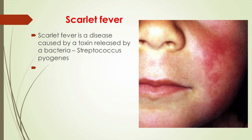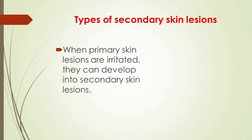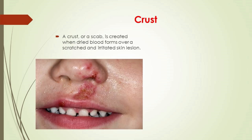When primary skin lesions are irritated, they can develop into secondary skin lesions. The most common secondary skin lesions include crust, ulcer, scale, scar, and skin atrophy. A crust or scab is created when dried blood forms over a scratched and irritated skin lesion.